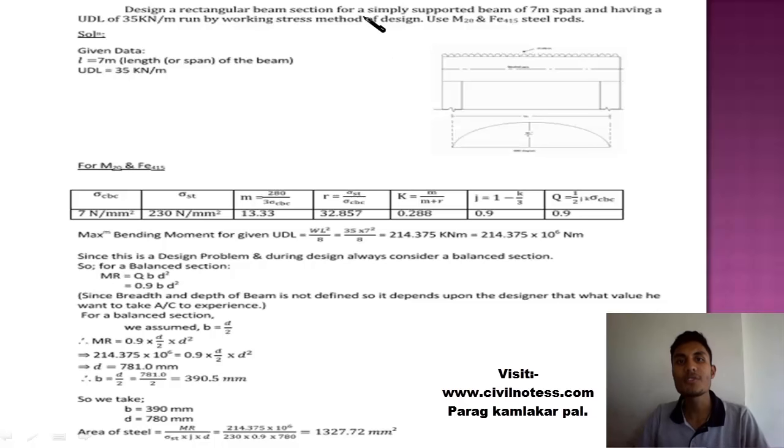Design a rectangular beam section for a simply reinforced beam of 7 meter span and having a uniformly distributed load of 35 kilonewton per meter run by working stress method of design. Use M20 grade of concrete and Fe415 steel rods.